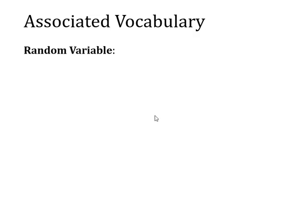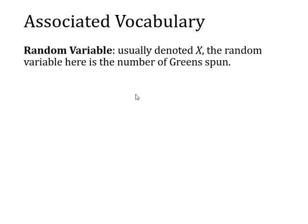There's loads of vocabulary that's really important to this topic, so I just want to run through some of that. First of all, something called a random variable. A random variable, as the name suggests, is something that varies by chance — it's random. It's usually denoted by X, and here in this example it would be the number of greens that are spun.